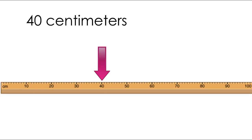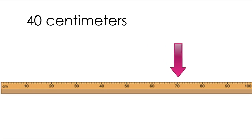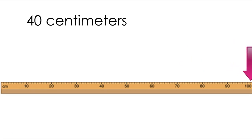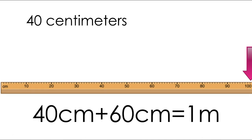Here's our next one. This time we're going to start at 40. How many more centimeters do we need to make 1 meter? Go ahead and write that down. Let's count and see. 10, 20, 30, 40, 50, 60. So we need 60 more centimeters to make a meter. Go ahead and write a number sentence that would go along with this. Does your number sentence look like this? 40 centimeters plus 60 centimeters equals 1 meter. If it does, give yourself a kiss in my brain.